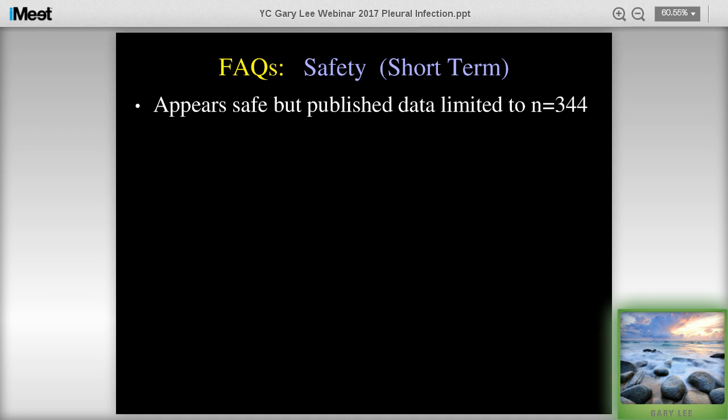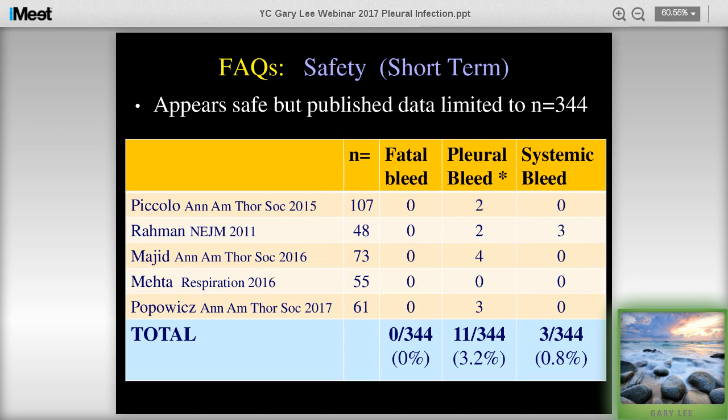The short-term safety for TPA and DNase use is good. The published data is currently limited to about 340 patients across several series. In all these series, there has never been any fatal bleeding. Clinically significant bleeding - requiring blood transfusion - is about 3%. Only the New England Journal paper reported systemic bleedings, but even in that study the placebo group also had systemic bleeding, suggesting these events are probably not directly related to TPA and DNase. Overall, this chart is quite reassuring.